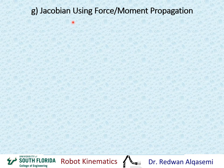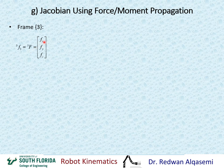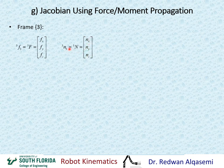We now move on to using force and moment propagation to find the Jacobian. For this method, we always start with the last frame — in this case frame 3. Since these are in Cartesian space, forces in frame 3 relative to frame 3 are the standard fx, fy, fz, defining f3,3, and moments are nx, ny, nz, defining n3,3. These are either given or assumed since they are in the Cartesian space of the end effector.